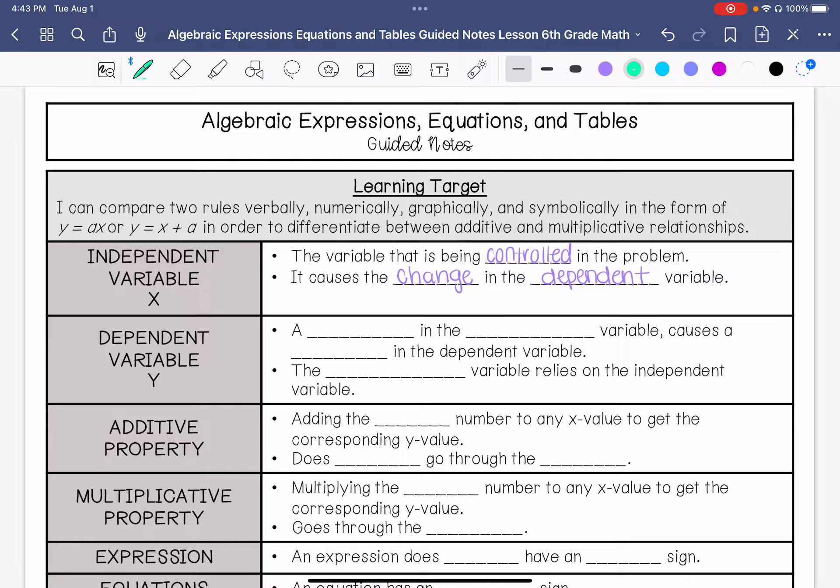The dependent variable is a change in the independent variable, which causes a change in the dependent variable. The dependent variable relies on the independent variable. In an equation, it's represented by the letter y and is represented on the y-axis, the vertical axis on a graph.